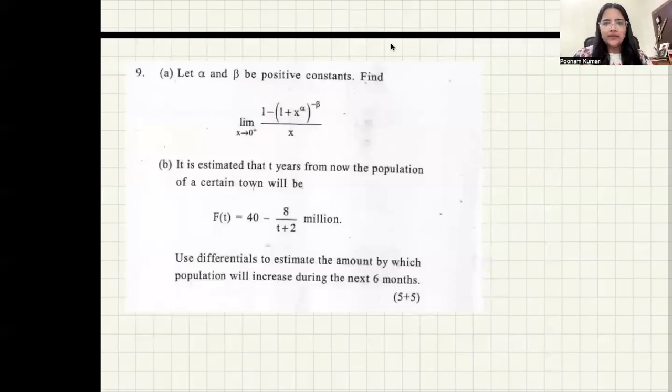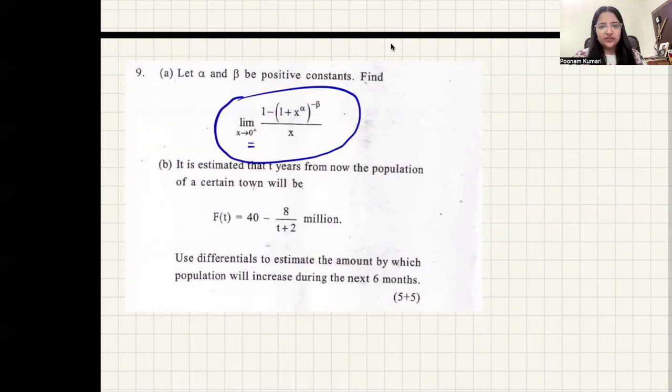Alright guys, so in this particular session we'll discuss question number 9 from your 2024 paper. Let's read the question and see how to go about it. Let alpha and beta be positive constants. Find this particular limit when x is tending to zero from the right side. The function is basically defined because x is in the denominator, so we are only looking at the right side of it.